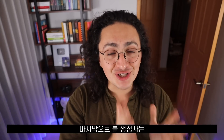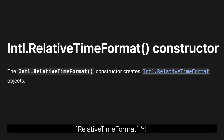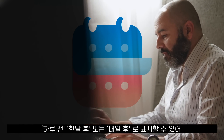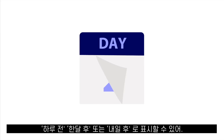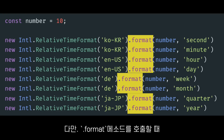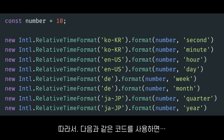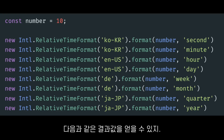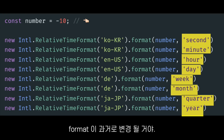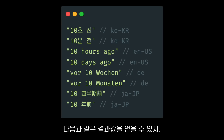The last constructor we are going to see is RelativeTimeFormat. This constructor allows you to format a number into 'one day ago', or 'in one month', or 'after tomorrow'. We use it like all the other constructors, except that when we call the format method, we have to specify what unit we want to format on. So with a code like this, we get an output like this. If we pass a negative number to the format function, the format will change to the past, getting an output like this.